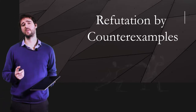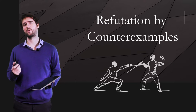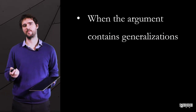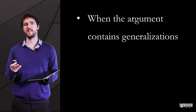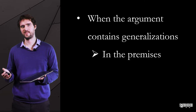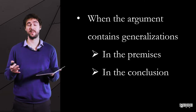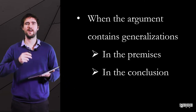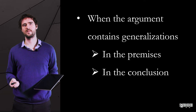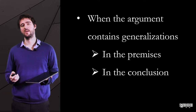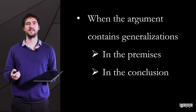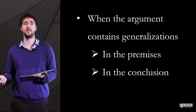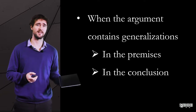Categorical syllogisms are called that way because they are made of categorical statements — statements that relate two types or categories of things. The classic, thousands-years-old example is: cats are mortal, Socrates is mortal, therefore Socrates is a cat.